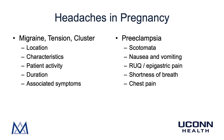Moving on to preeclampsia, the associated symptoms that we see include scotomata — visual changes that look like flashing lights in front of the eyes — nausea and vomiting, right upper quadrant or epigastric pain, shortness of breath, and chest pain.